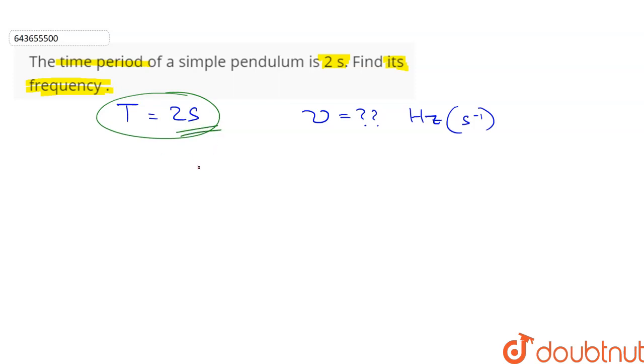Therefore, the frequency nu is the inverse of the time period T. Therefore, 1 upon 2 Hertz is the frequency of the simple pendulum.